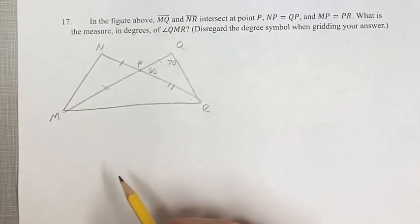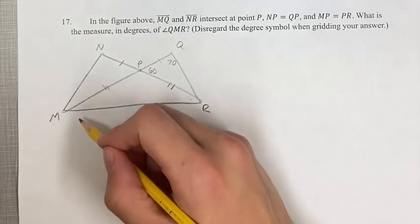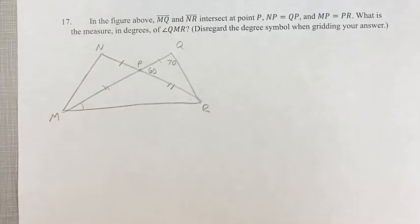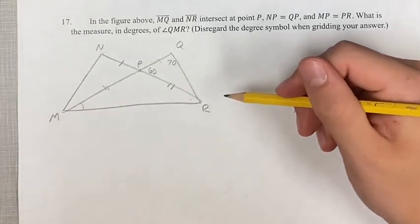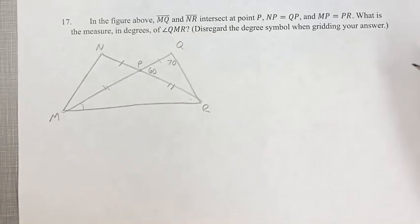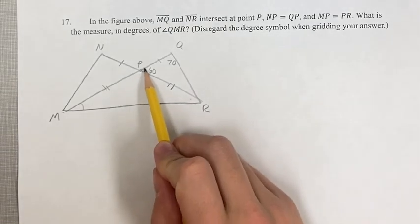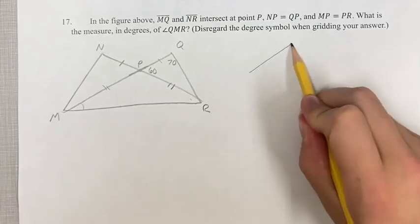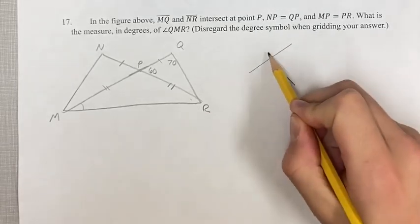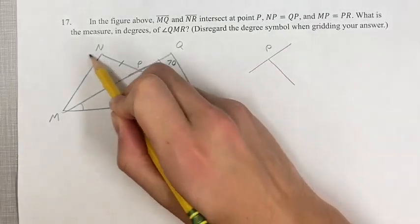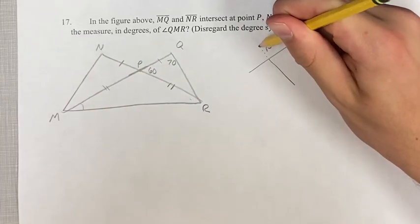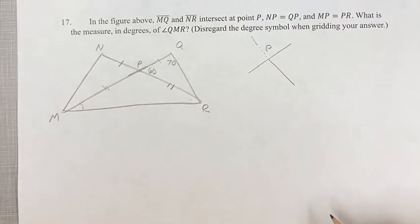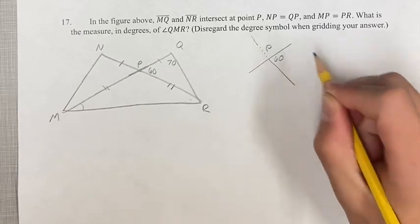We're asked to find the measure in degrees of angle QMR, that angle right there. The first thing we need to do is recognize that we have this straight line here. If you think of this as point P, we're ignoring this line out here, although I can just draw it. We have this 60-degree angle right there.